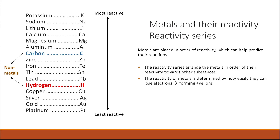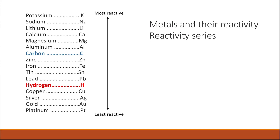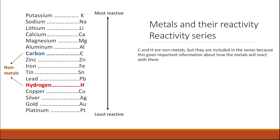The metals at the top of the reactivity series are the most reactive — they can easily form positively charged ions — and the ones at the bottom are the least reactive. In the reactivity series, you can notice that carbon and hydrogen are added, which are non-metals.